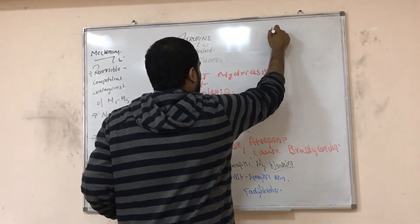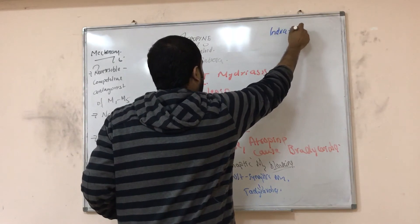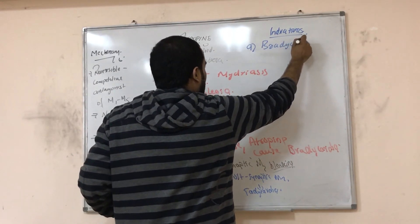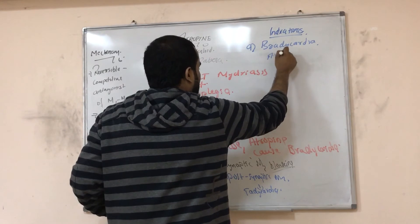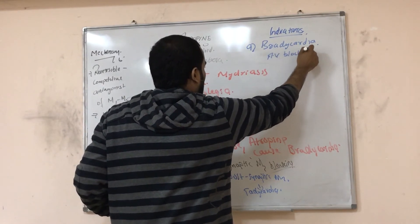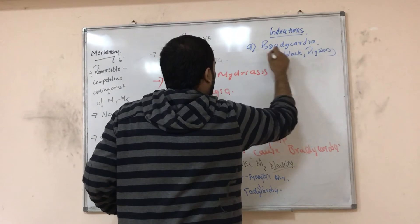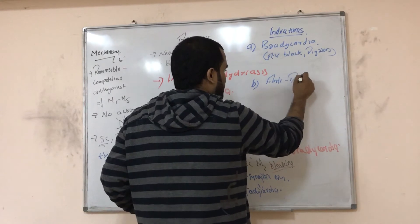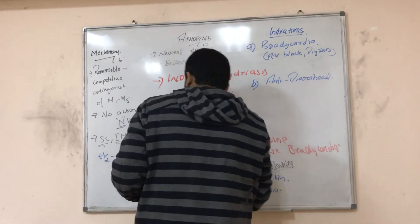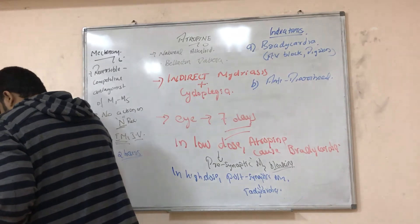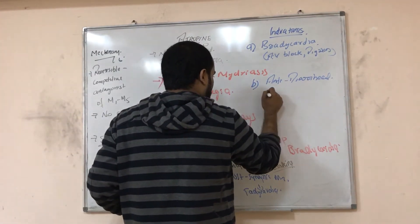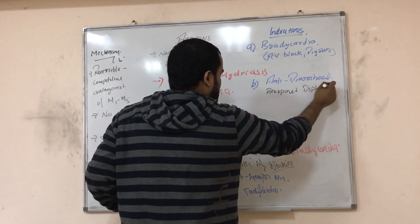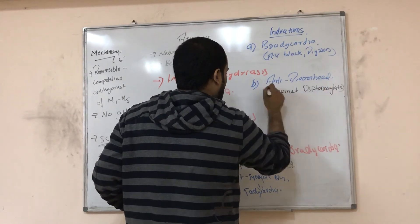Atropine is used in the case of bradycardia and AV block — for example, with digoxin toxicity, we can give atropine. It is also a good antidiarrheal agent, because diarrhea is controlled by the parasympathetic system. The combination of atropine plus diphenoxylate is used as an antidiarrheal.